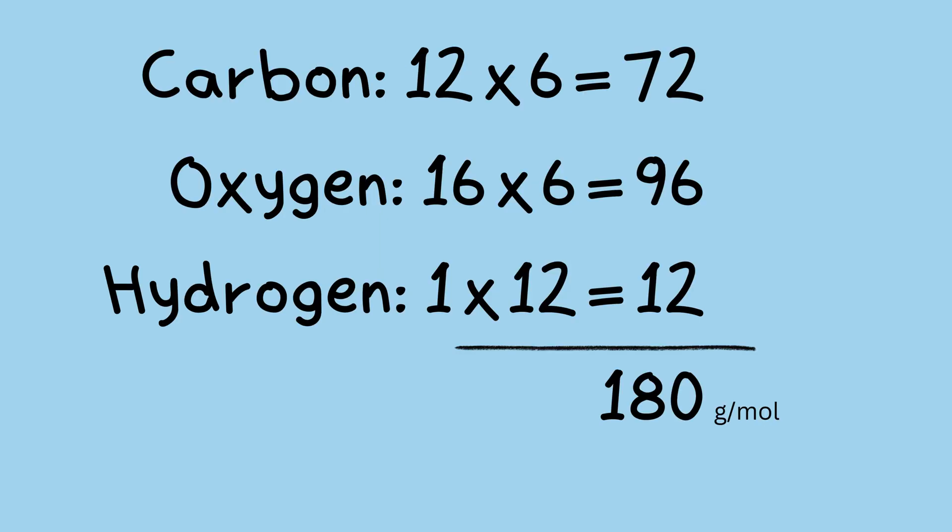Carbon and oxygen are much heavier than hydrogen, so over 90% of the mass of the glucose comes from carbon dioxide.